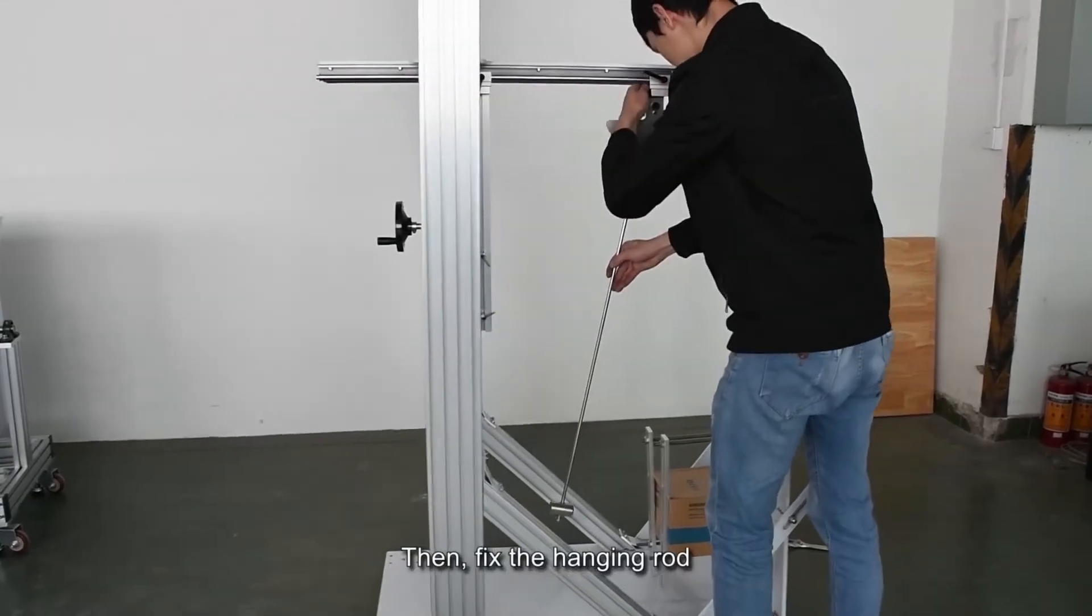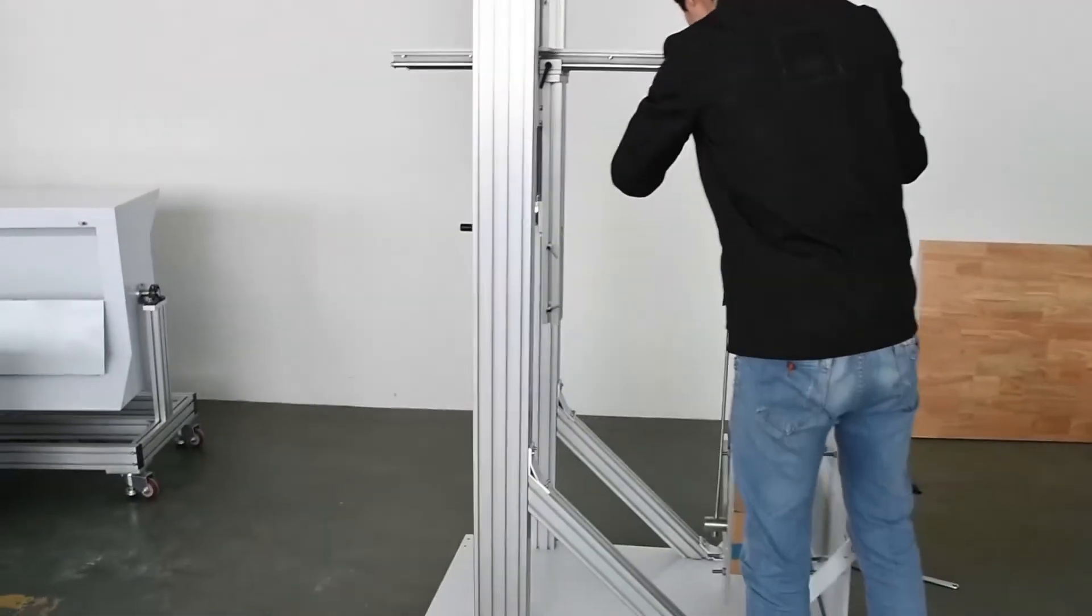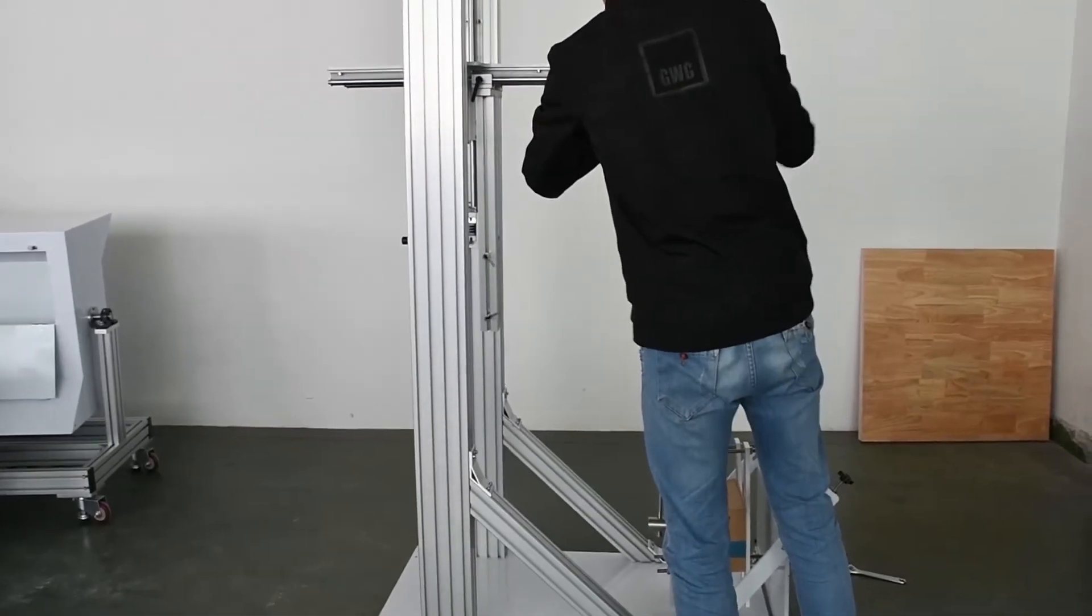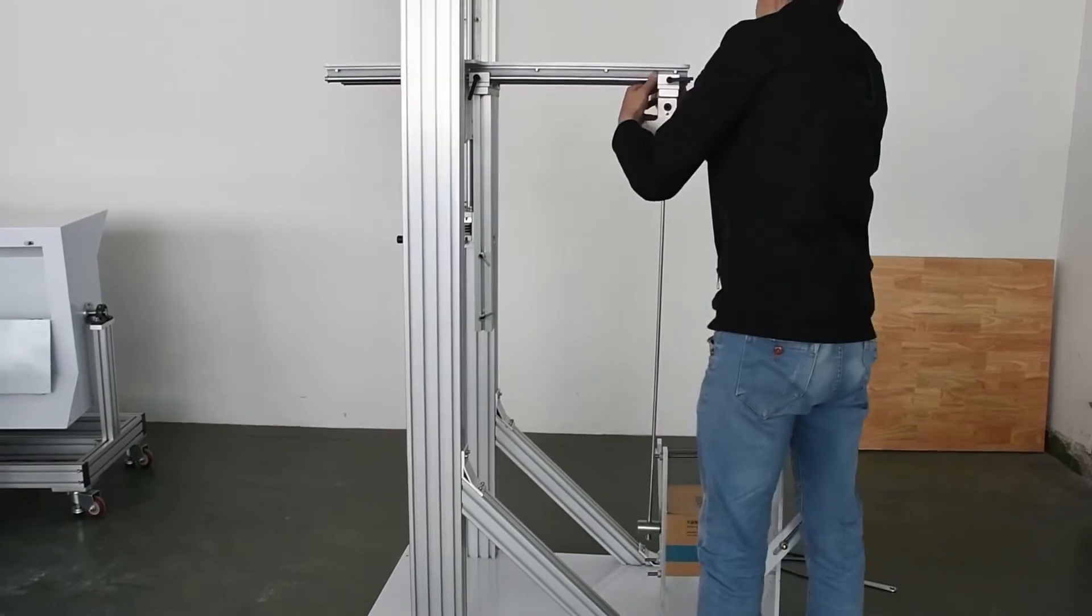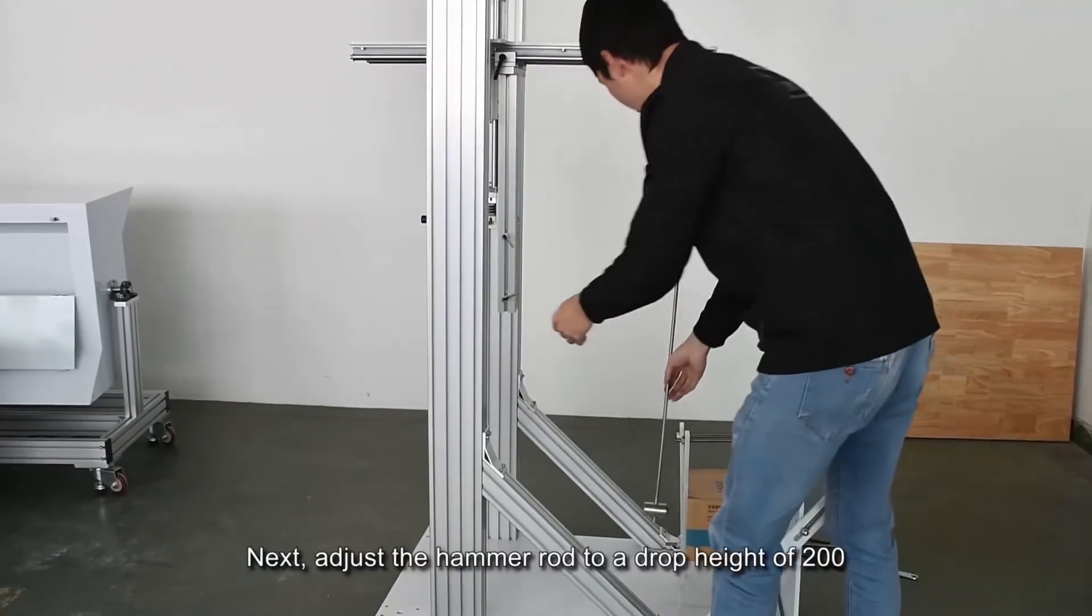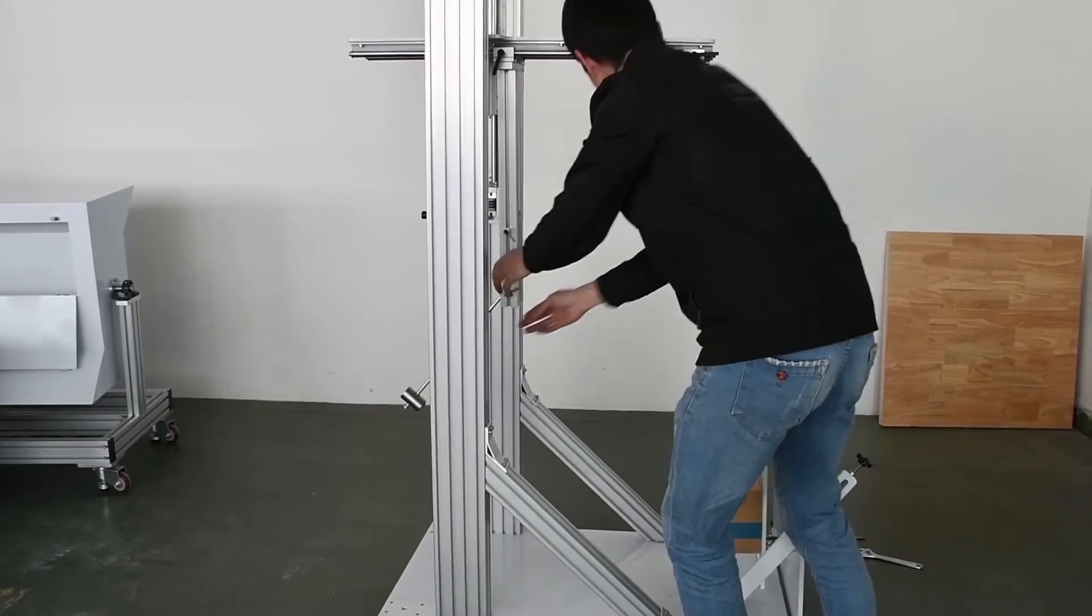Then, fix the hanging rod. Next, adjust the hammer rod to a drop height of 200.